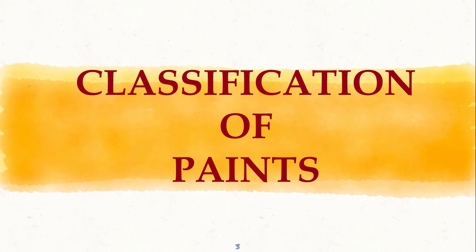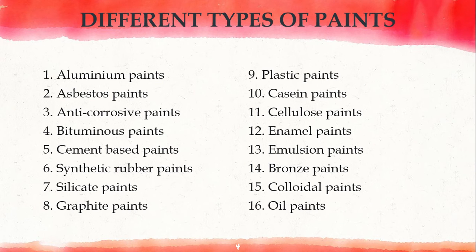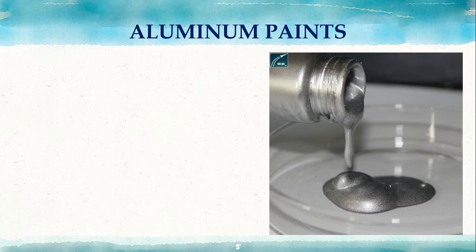Now let's get into the classification of paints — the various kinds of paints we generally use. There are around 16 kinds of paints available. We will go into detail one by one, covering what each paint is made of and where it is applied. Remember, all paints are not suitable for all conditions, so for different conditions we use different types of paints.